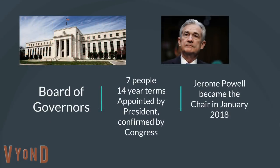The Federal Reserve is run by a Board of Governors in Washington, D.C. There are supposed to be seven people on the board, serving 14-year terms — that's how they're independent. 14 years ago, George W. Bush was president, so there should technically be Bush people, Obama people, and Trump people on the Federal Reserve. They're appointed by the president and confirmed by Congress, but they don't usually stay their whole 14 years, which is not a good thing.